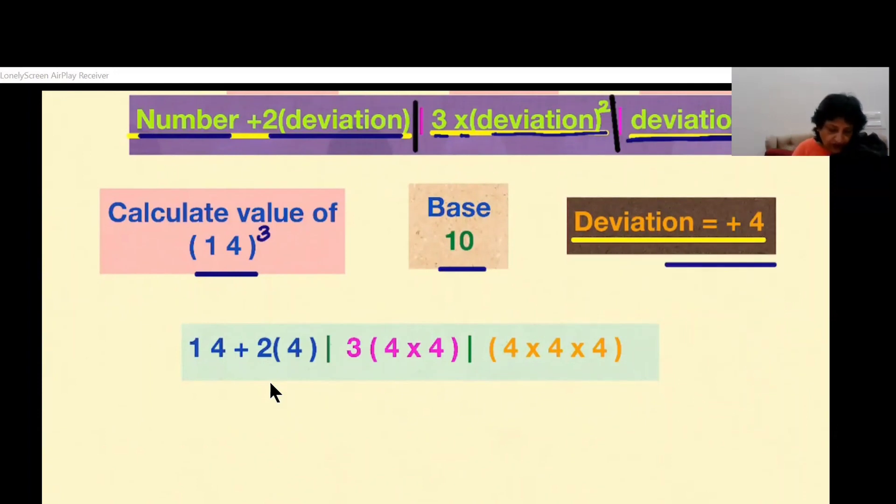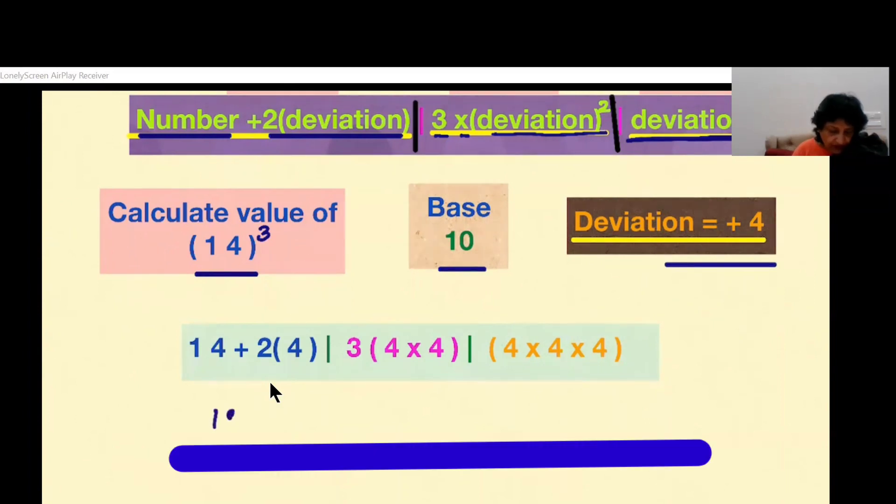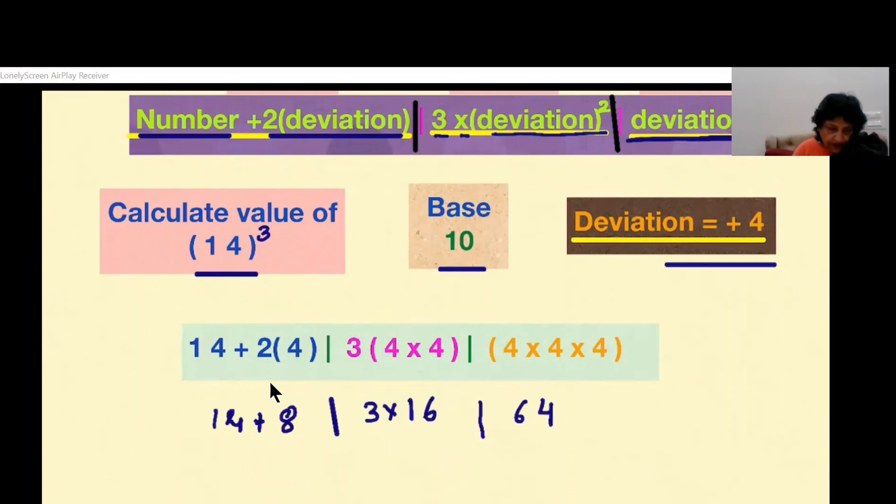14 plus twice the deviation will make 14 plus 8. Now the second step is 3 multiplied by 4 squared, that means 3 multiplied by 16. And the third step is 4 cubed, so 4 cubed is 64.